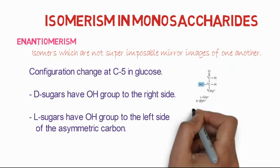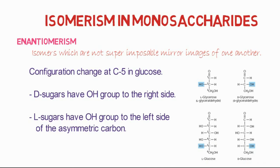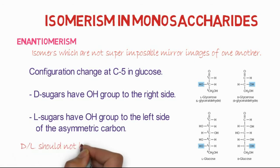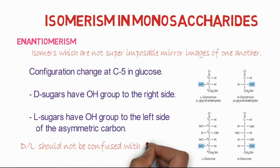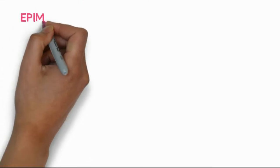This refers especially to the asymmetric carbon. In D-glyceraldehyde the hydroxyl group is on the right side, while in L-glyceraldehyde the hydroxyl group is on the left side. Similarly in glucose, D and L forms exist and this should not be confused with optical isomerism.